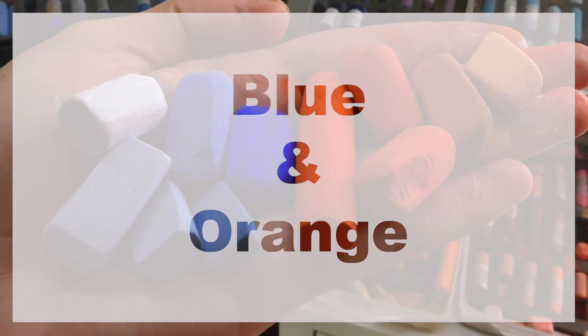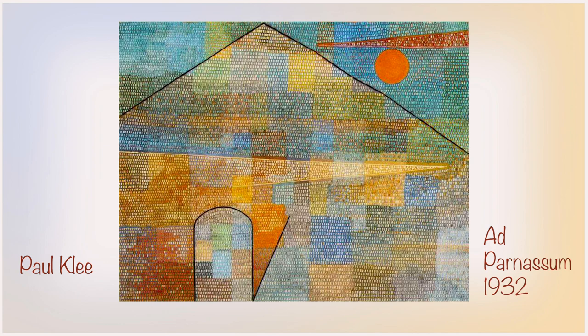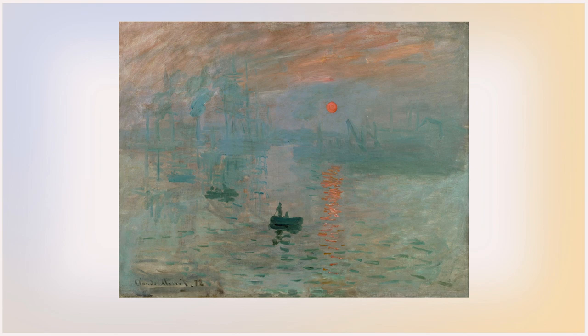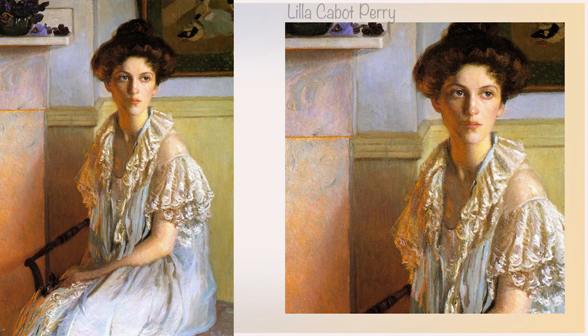So blue and orange — possibly my favourite colour combo, maybe the one I end up using the most in my work. We'll start with a Paul Klee, which is a bit more abstract. I often find that if I'm struggling with colour theory, the best place to look is in the abstract world, because if ever there's a place that makes use of good colour theory, it's there. This piece in particular really reminds me of the next painting — Claude Monet's Impression Sunrise. Both of these paintings have that same impact with the orange sun gleaming out from the blue surroundings. Again, this is dramatic use of the opposite colours.